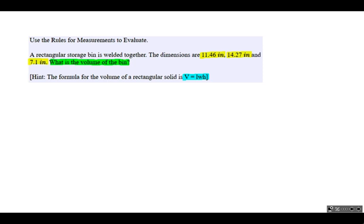And we're given a hint here. The formula for the volume of a rectangular solid is V, or volume, is equal to LWH, length times width times height. And that's one that we ought to be able to remember. I want to point out at the very top, use the rules for measurements to evaluate. So that's going to be important in our final answer for this problem, and we'll talk about those in just a moment.